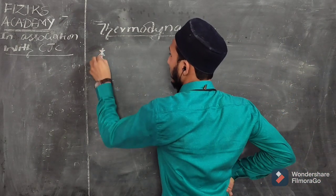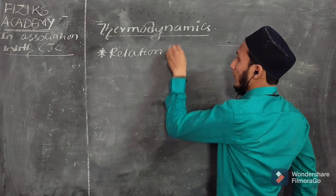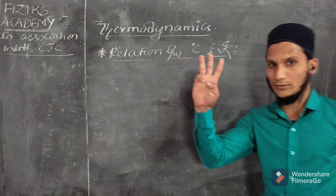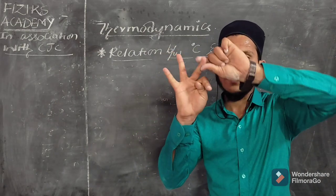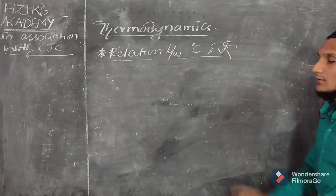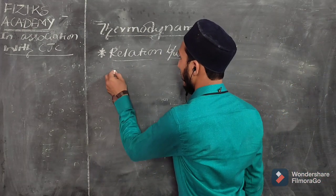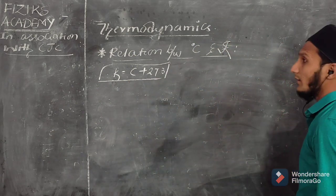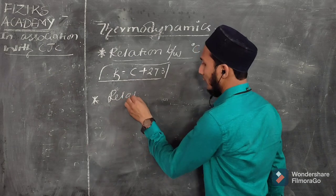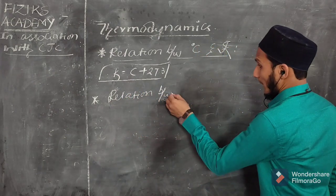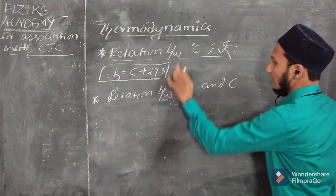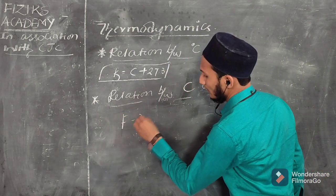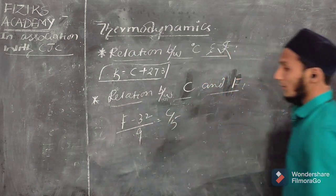Now, the relation between degree Celsius and Kelvin: out of the three units — degree Celsius, Kelvin, and Fahrenheit — the Kelvin unit is the international or SI unit. The relation is: Kelvin equals Celsius plus 273. The relation between Fahrenheit and Celsius is: F minus 32 divided by 9 equals C divided by 5.